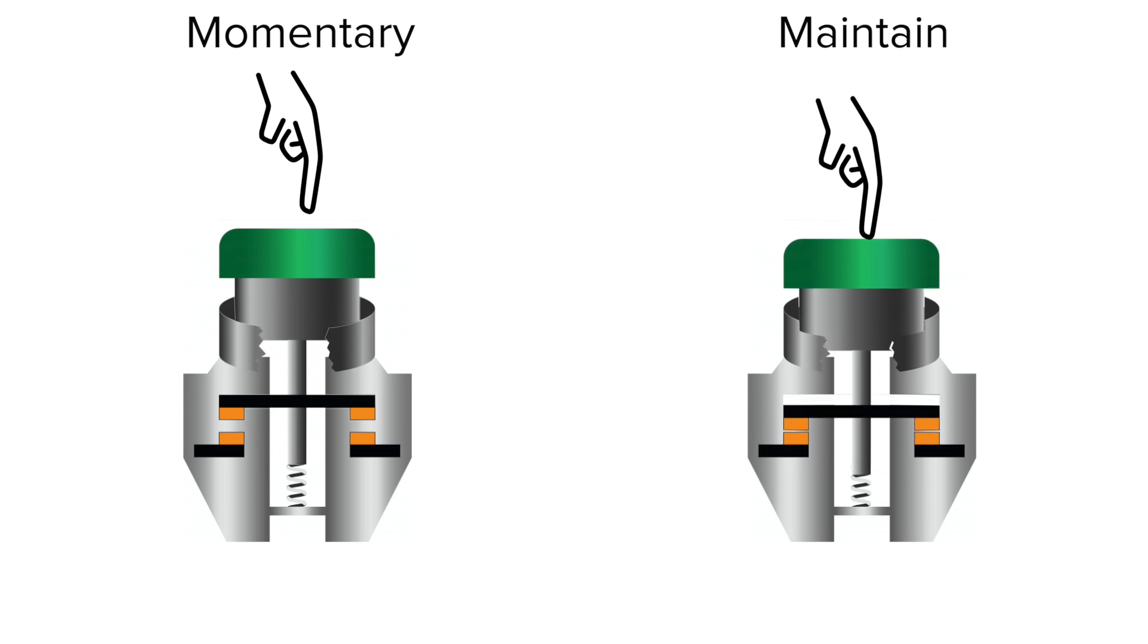On the other hand, maintained type push buttons are pressed and maintained their state after being pressed. You will have to press the button again to switch states or return it to the normal state.